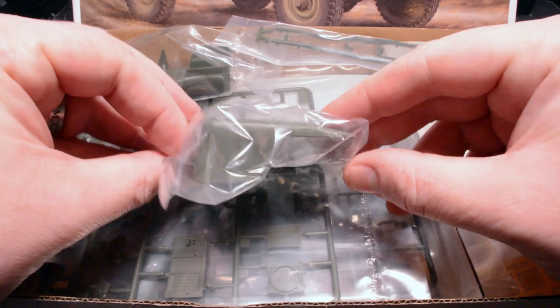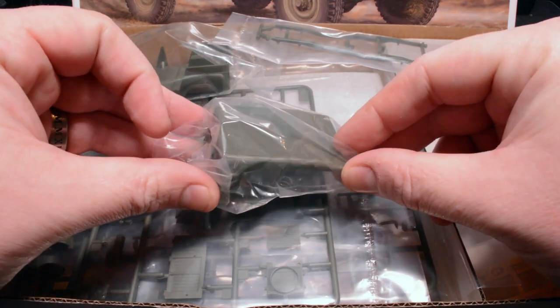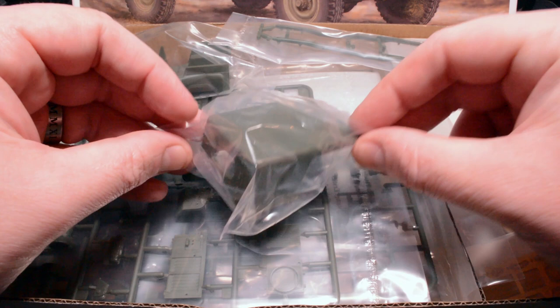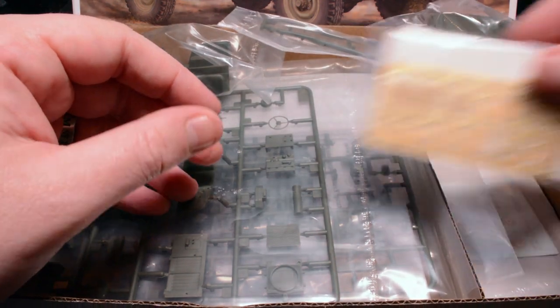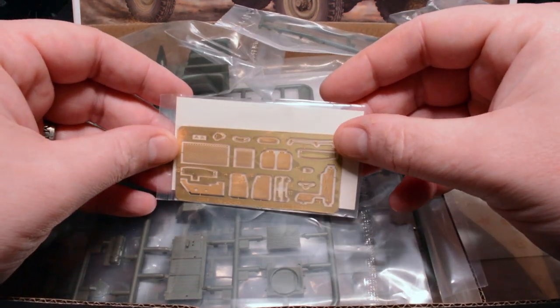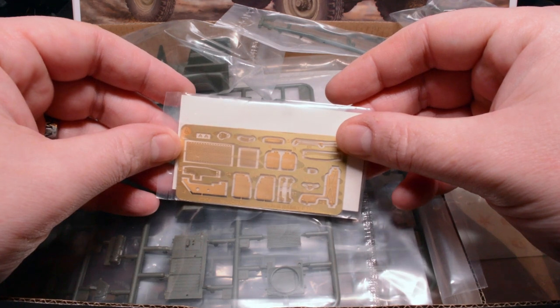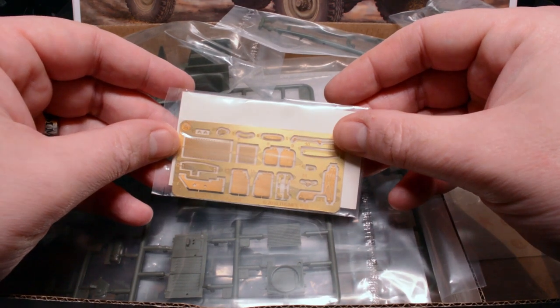The single piece roof was well textured with some small folds and ripples in the cloth, not as ragged as the model from the game but good enough. There was a small photo etched fret in there as well, with lots of the finer details and some mesh grills for up front.